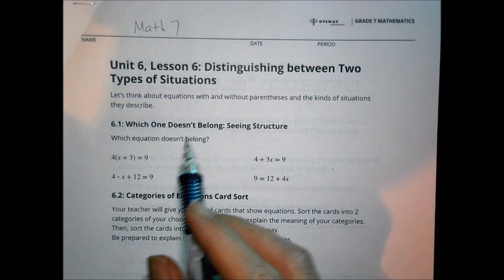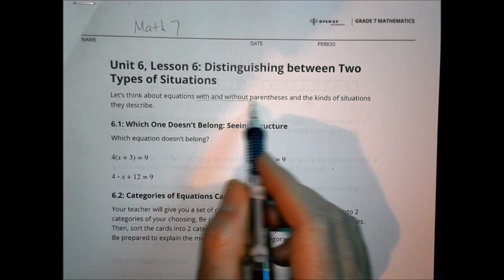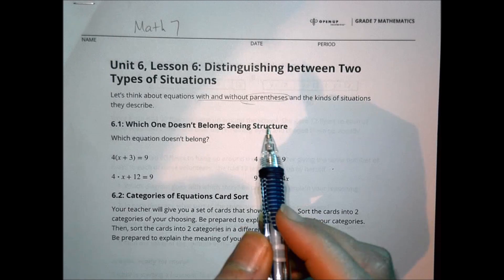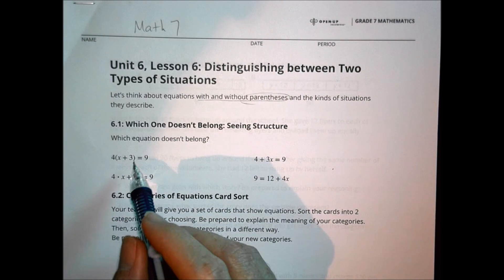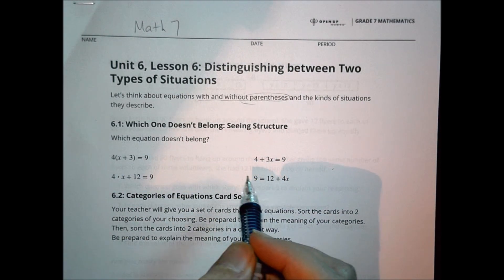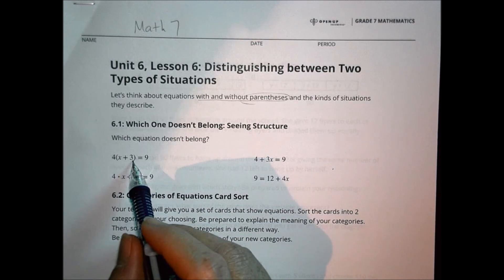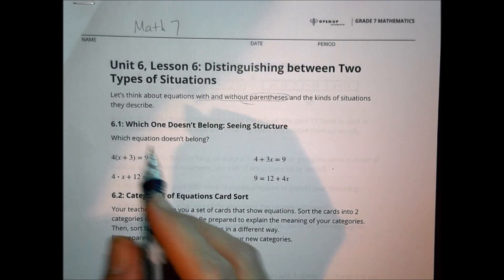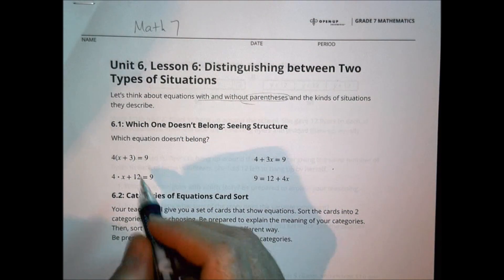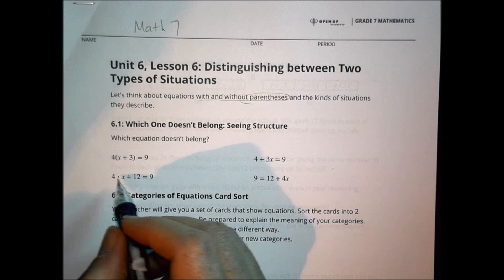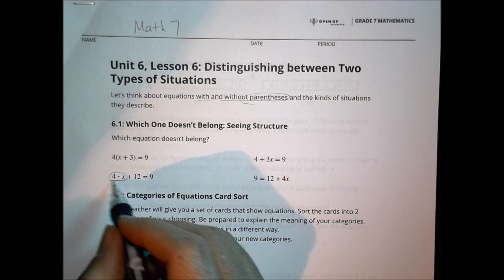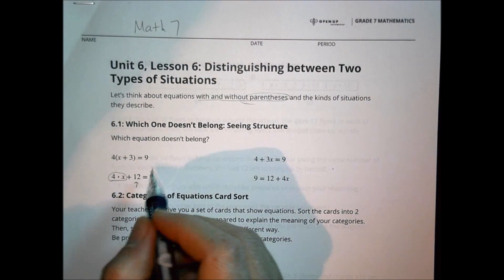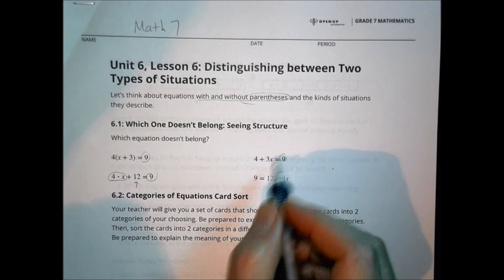We're going to be looking at equations with and without parentheses and the kind of situations they describe. When we look at these four equations, we notice that one has parentheses and the others do not. We want to look at which one belongs and which one doesn't belong. They all seem to have the 9 in common.